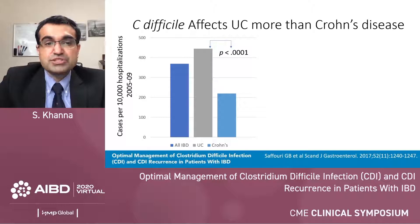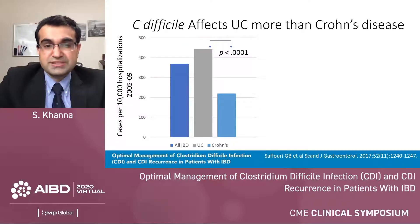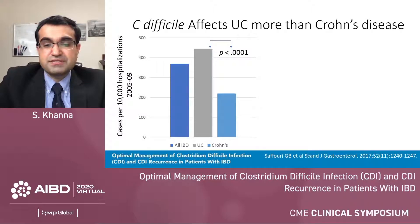Similar data have also been seen from national data sets. Data from the National Hospital Discharge Survey show that C. diff actually affects ulcerative colitis more than Crohn's disease. On the y-axis, cases per 10,000 hospitalizations show that ulcerative colitis is a more common comorbidity with C. diff infection compared to Crohn's disease, suggesting that patients with colonic involvement have a higher likelihood of C. diff infection.